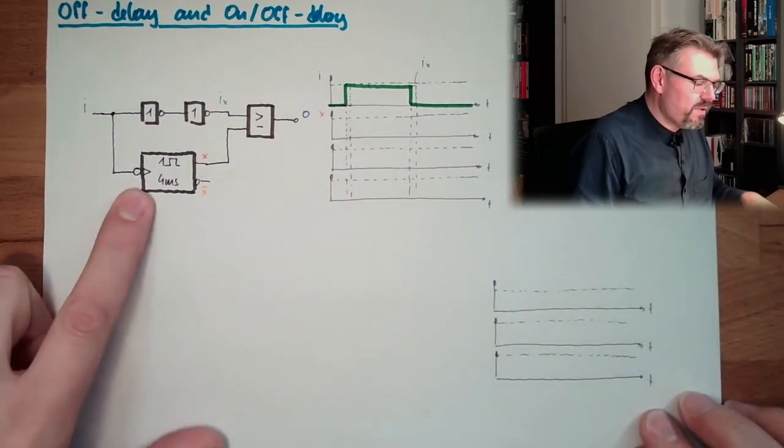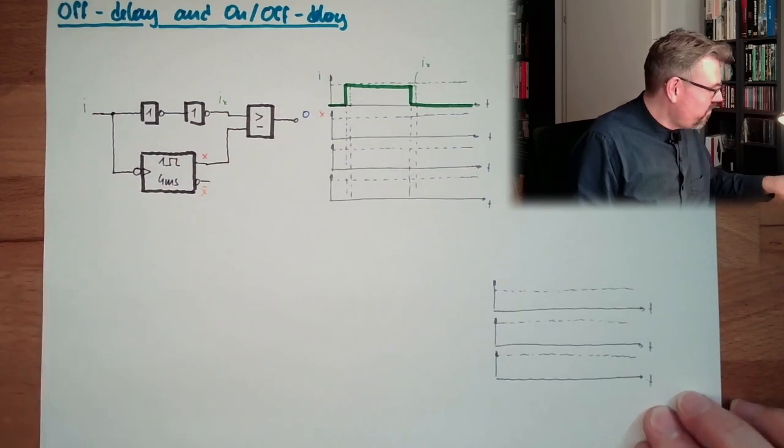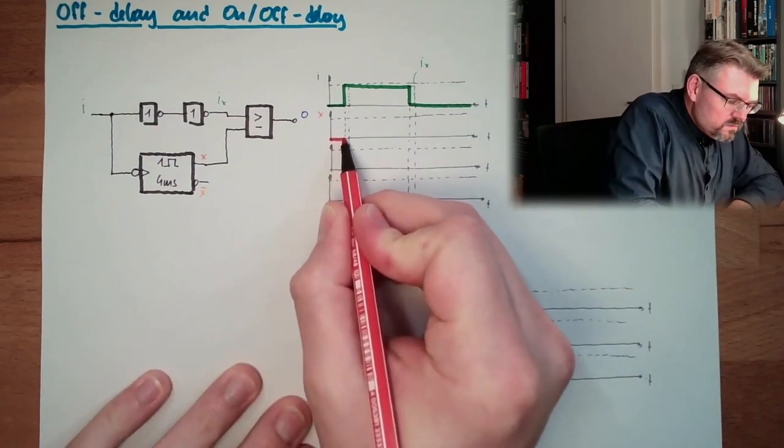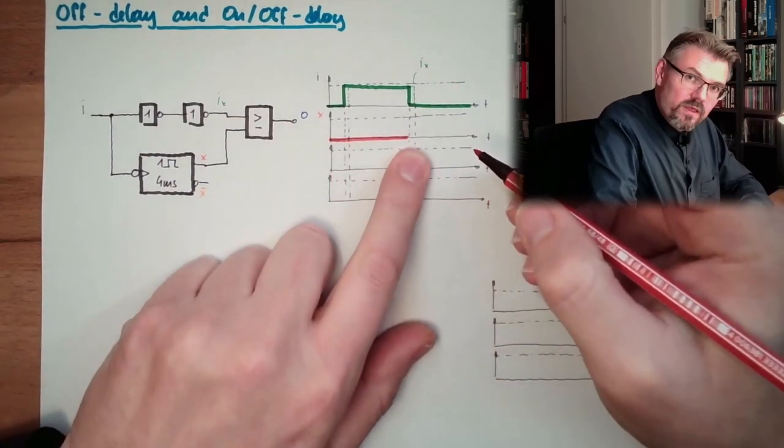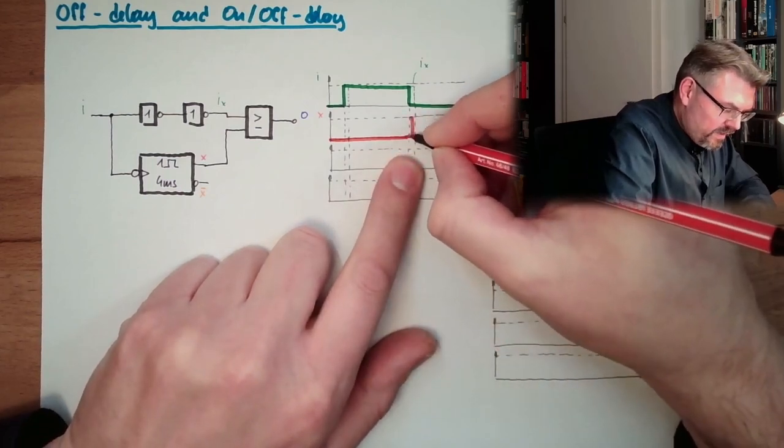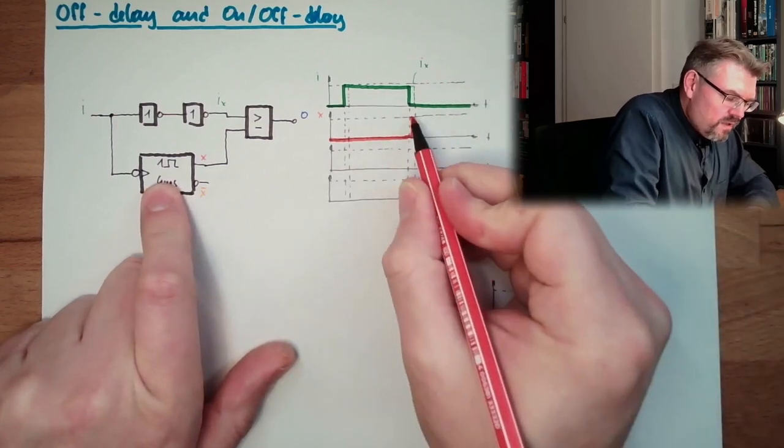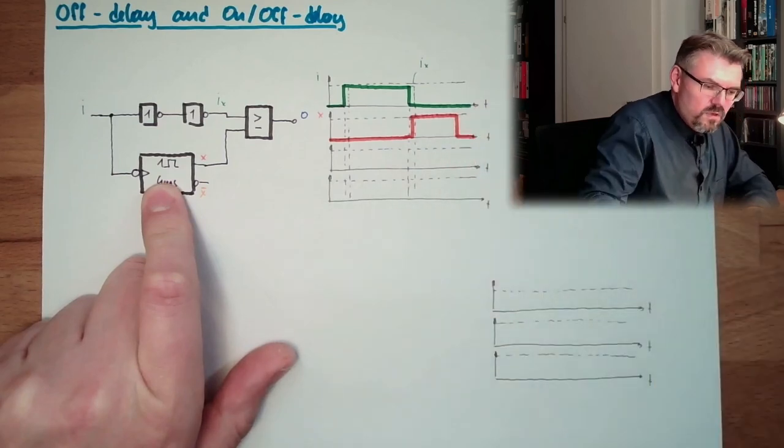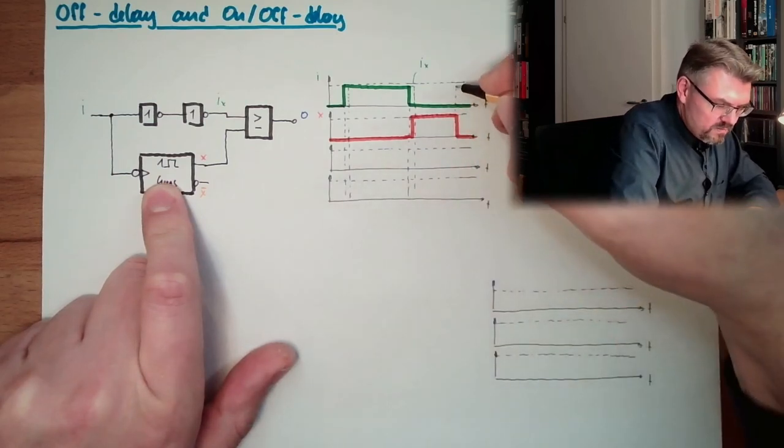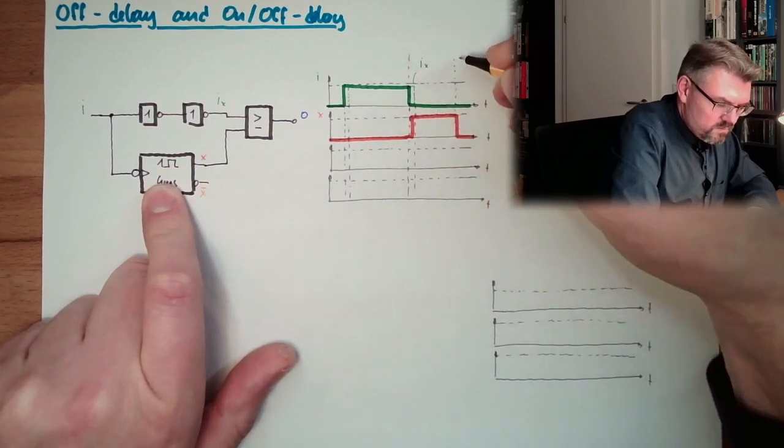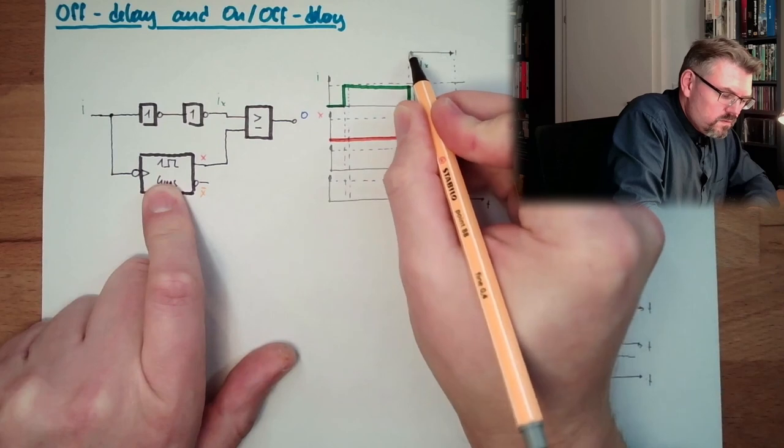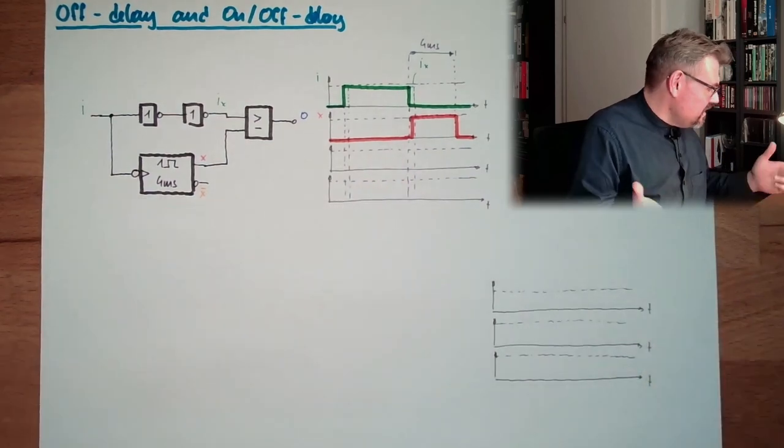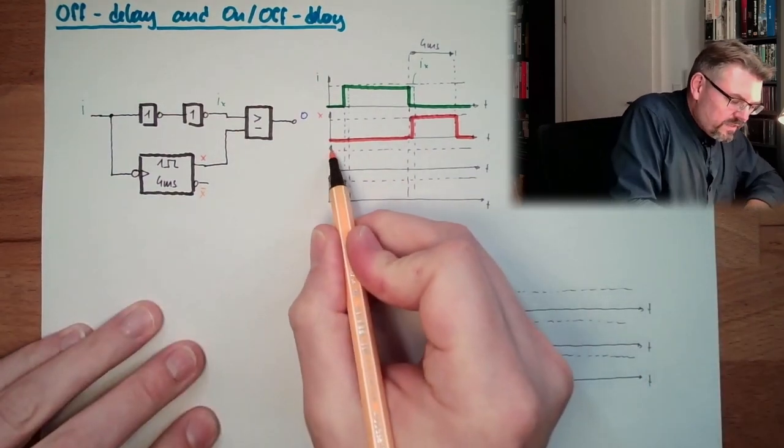X, it's triggered by the falling edge now. So actually, X stays zero. Triggered by the falling edge here. Adding a little bit time, because this has a switching time. And then after four milliseconds, this will be OFF. Here we have this four milliseconds. And NOT X is not very important right now,